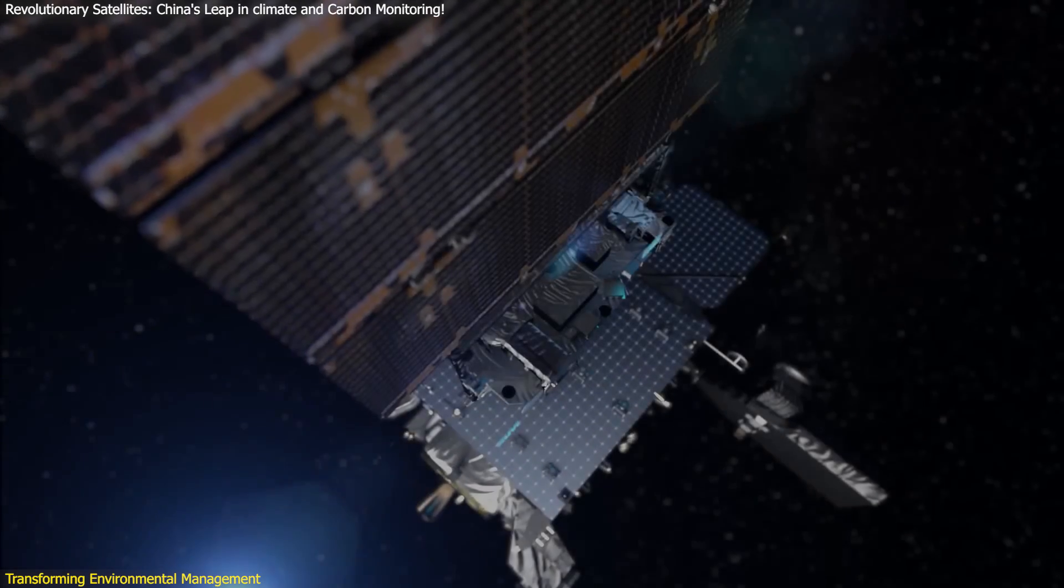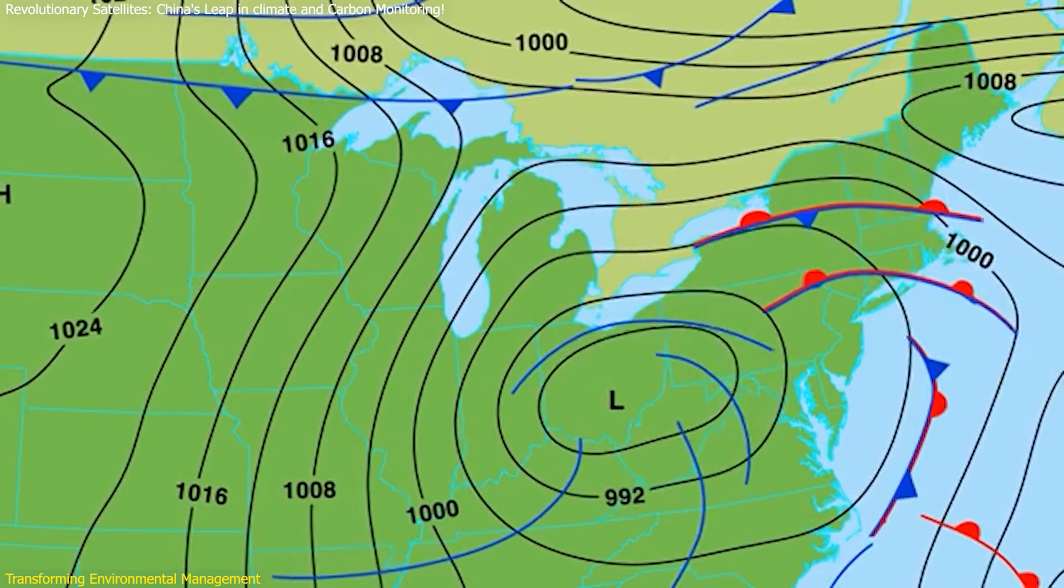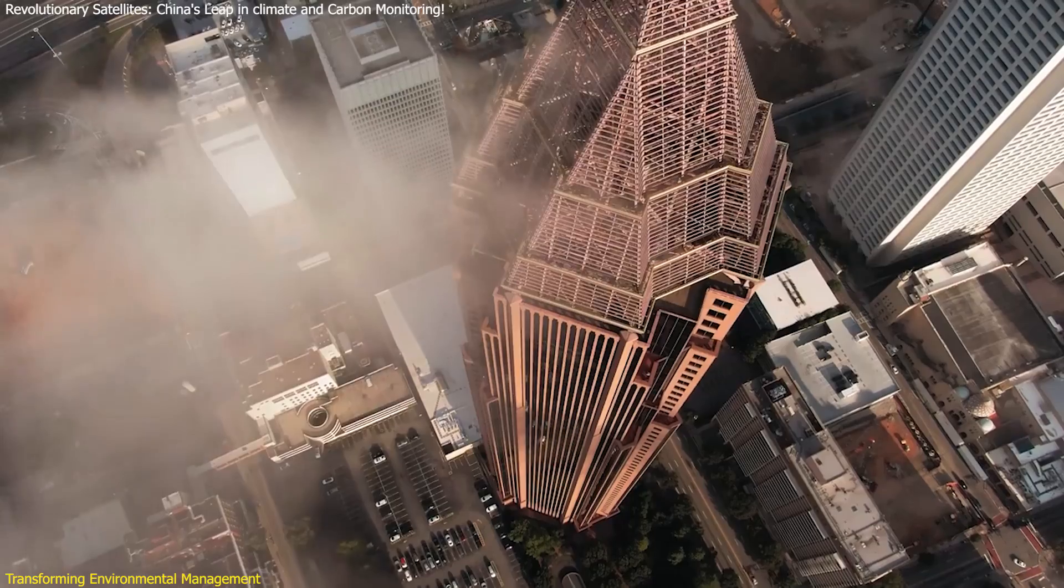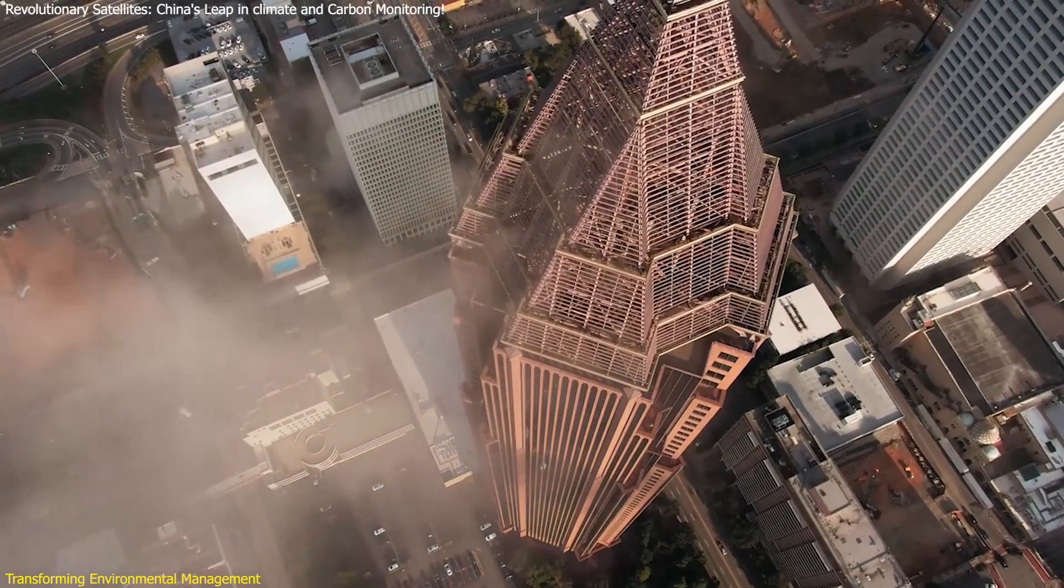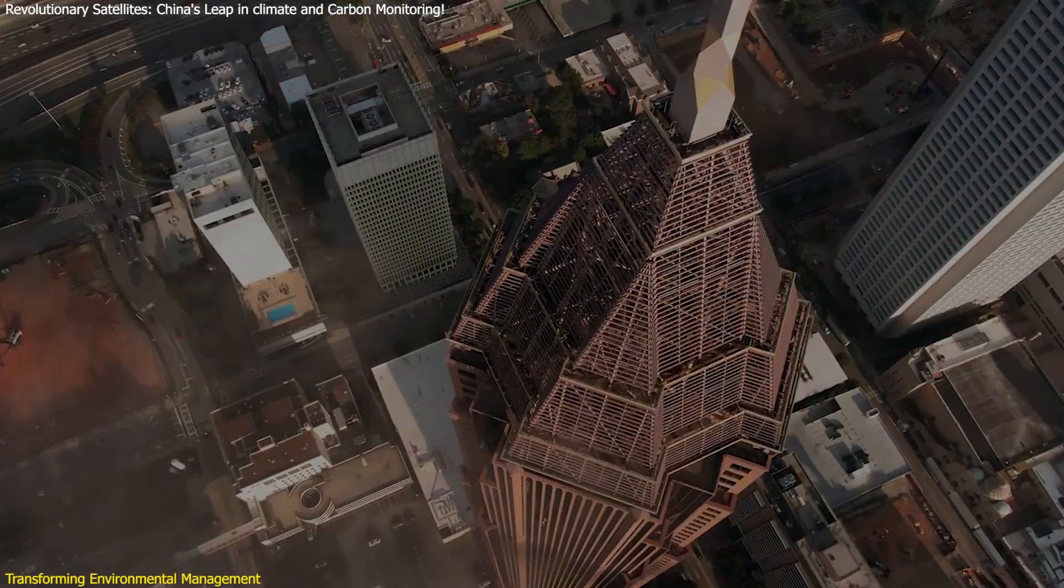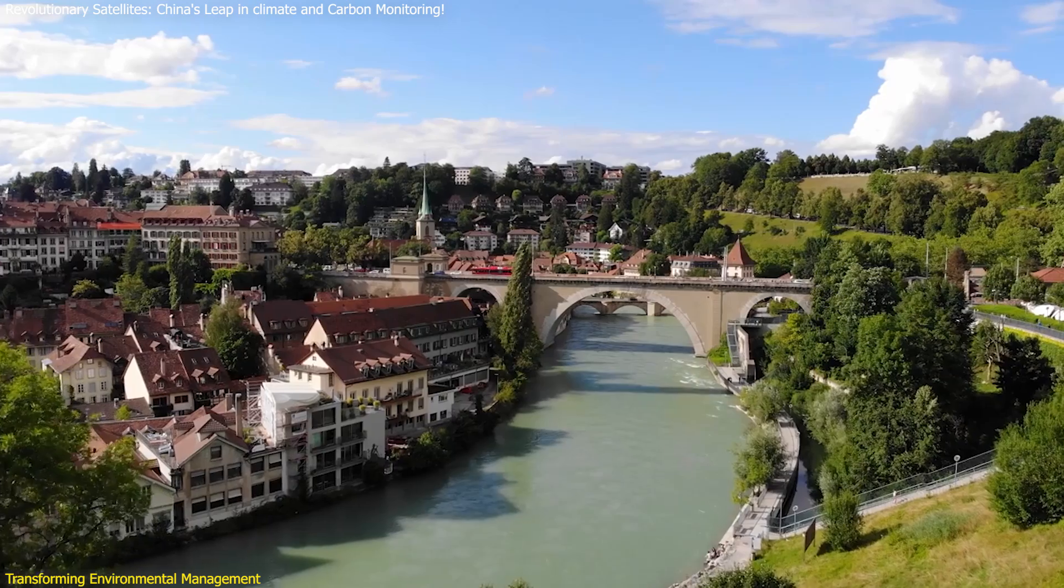Additionally, these satellites contribute to urban planning and development. By providing detailed data on air quality, heat islands, and other environmental factors, they help cities develop strategies to reduce pollution, manage green spaces, and improve overall urban sustainability. This information is crucial for designing healthier, more livable urban environments.